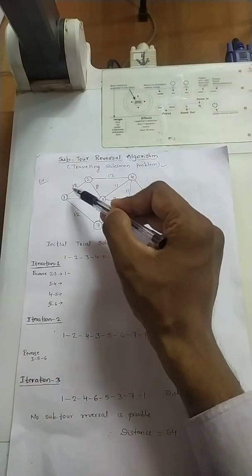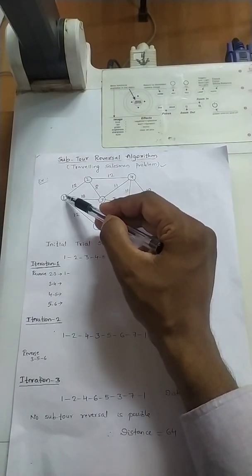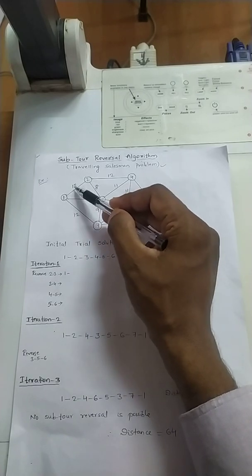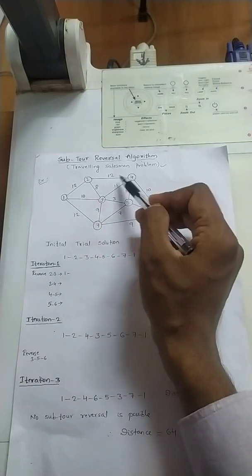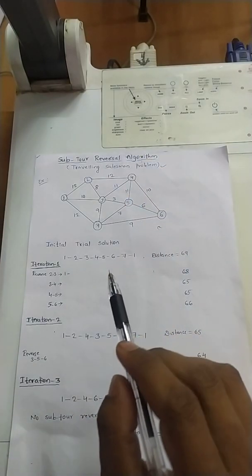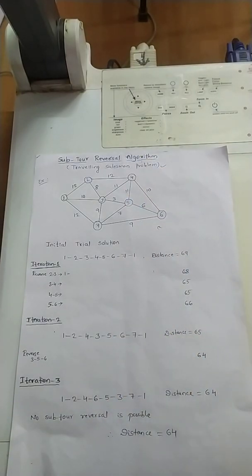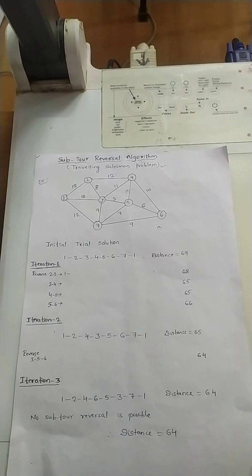The distance, that is the edge distance, will be given. For example, moving from city 1 to 2 is 12 units. Similarly, from 2 to 4 it is 12. We should visit all the cities and try to minimize the distance. Let us see how we can do this by using the Sub2 Reversal Algorithm.